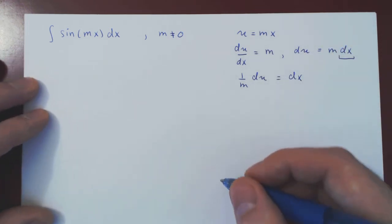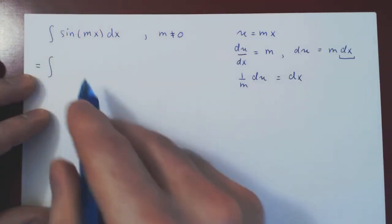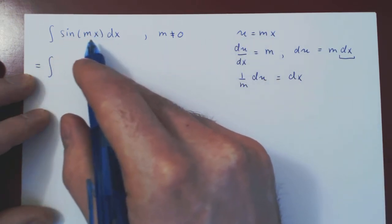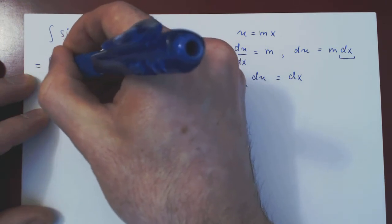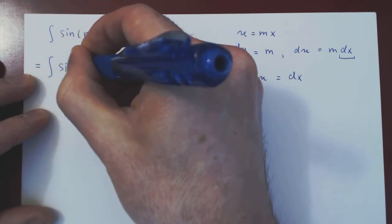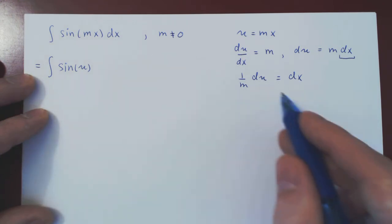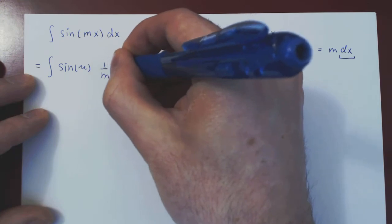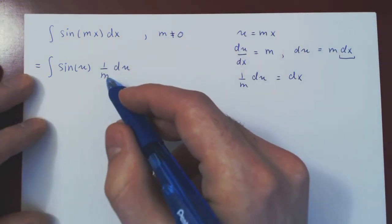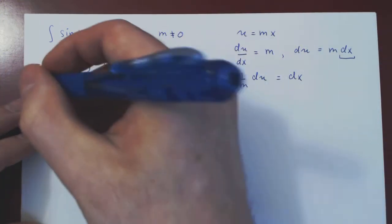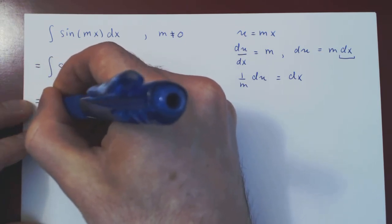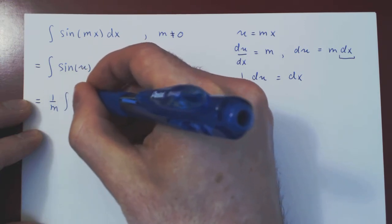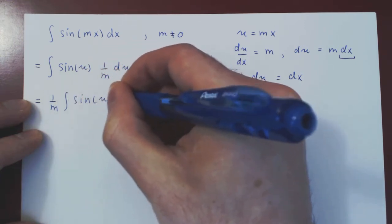Now we're good to go. We have the integral of sine of mx, but mx is simply u, so this becomes sine of u. And dx is simply 1 over m du. Since m is a constant, we can factor 1 over m outside of the integral, leaving us with the integral of sine of u du.